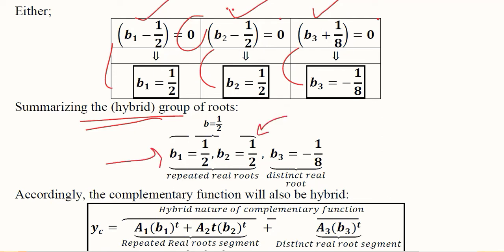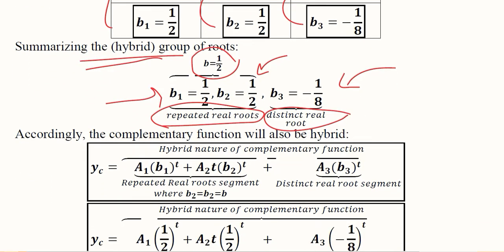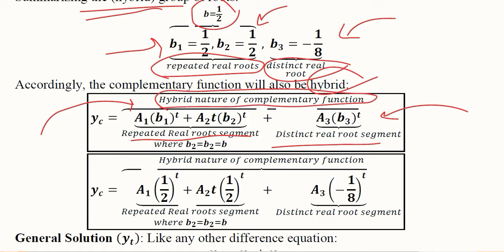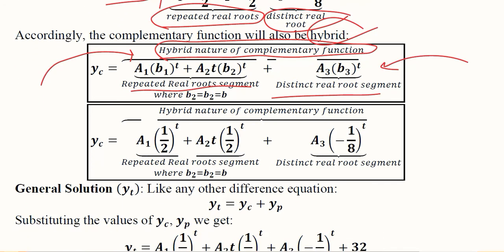We find that b1 and b2 are the same value, making them repeated real roots, while b3 is different — a distinct real root. Collectively, b1 and b2 can be termed as b = 1/2. The complementary function is then formed with a hybrid nature: the first two roots contribute the repeated real root segment and the final root contributes the distinct real root segment.